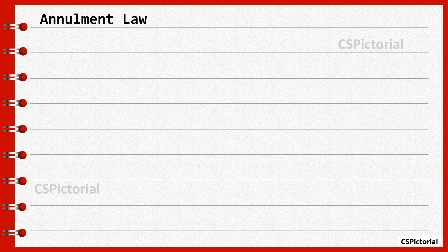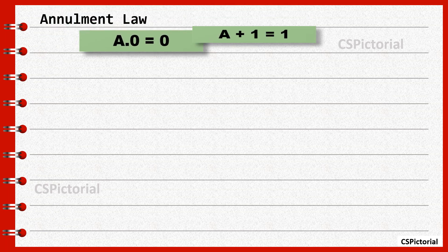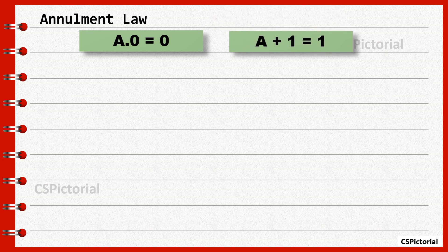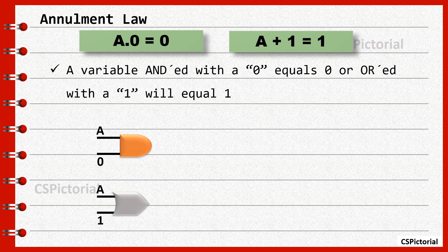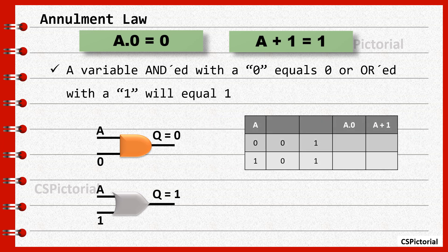Annulment law. This law states that A dot 0 equals 0 and A plus 1 equals 1, which means any variable ANDed with 0 always equals 0, and a variable ORed with 1 always equals 1. This law can be proved using a truth table. We know that the AND gate output is 1 only when both inputs are 1, so even if one input is 0 the AND output will always be 0. In OR operation, if any one input is 1 the output is 1, so a variable ORed with 1 always equals 1 no matter what the input variable value is.